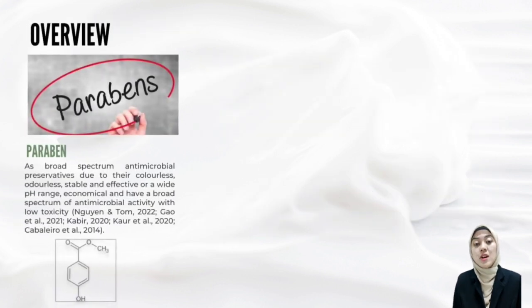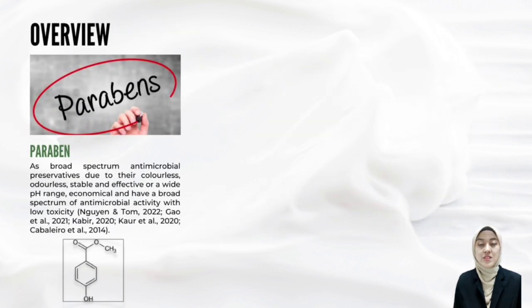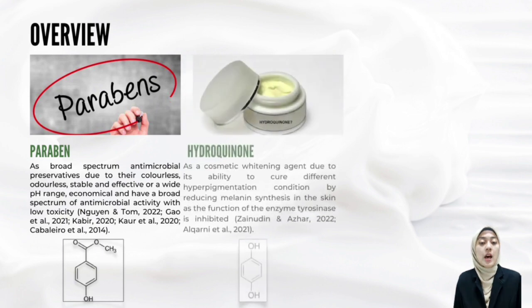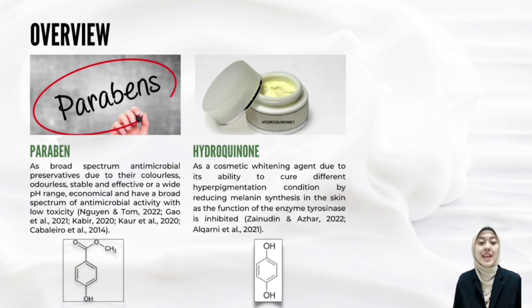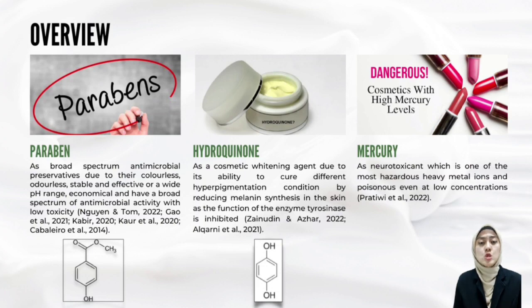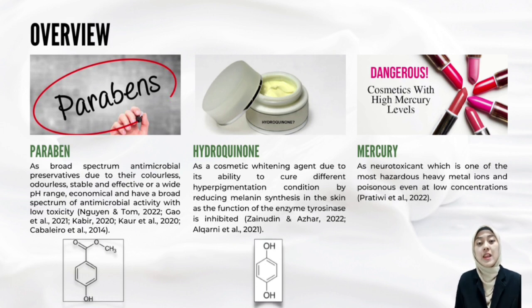Parabens are used as broad-spectrum antimicrobial preservatives in a wide range of personal care products, cosmetics, food and pharmaceutical products. Hydroquinone is well recognised as a cosmetic whitening agent due to its ability to treat different hyperpigmentation conditions by reducing melanin synthesis in the skin as the function of the enzyme tyrosinase is inhibited. Mercury is commonly known as a neurotoxicant, which is one of the most hazardous heavy metal ions and may be poisonous even at low concentrations.